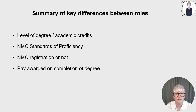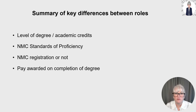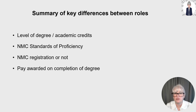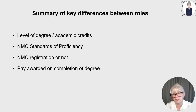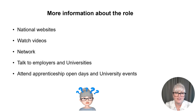In summary, the key differences between a support worker role and a registered nurse relate to the level of academic credit, the Nursing and Midwifery Council standards of proficiency, NMC registration, and the pay awarded on completion of the degree. A registered nurse usually starts at a higher pay band than a new starter nursing associate, as the registered nurse leads care with more accountability and responsibility. Some nursing associates choose to top up their foundation degree using a two-year top-up course to become a registered nurse to further develop their career.